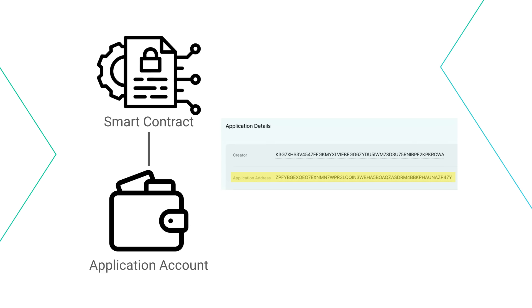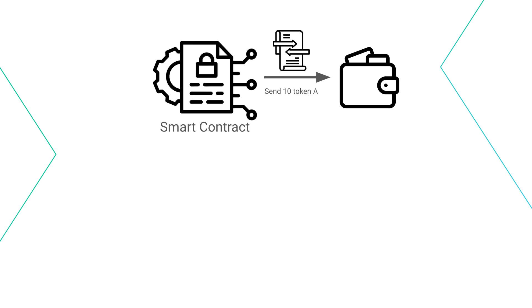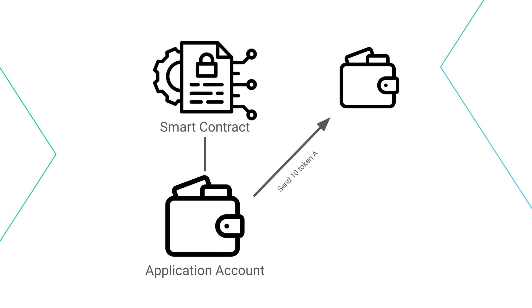Now, in Algorand, smart contracts — also called applications — are not accounts and are programs with code that execute business logic. In other words, they cannot send transactions on their own even if an external account calls the smart contract. But all smart contracts have an associated application account, which is the same as every other Algorand account that can send transactions. These application accounts are linked to the smart contract code, so if the smart contract has code that sends a transaction — called an inner transaction — the application account sends the transaction. So Algorand smart contracts can do the same thing that Ethereum smart contracts do, but just in a different way.